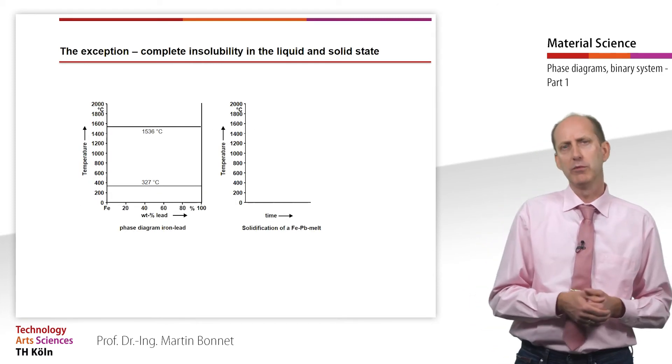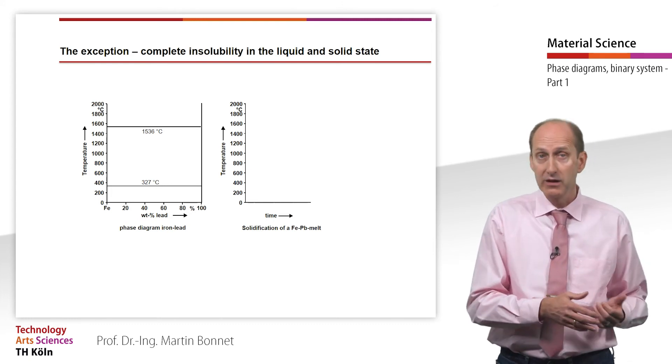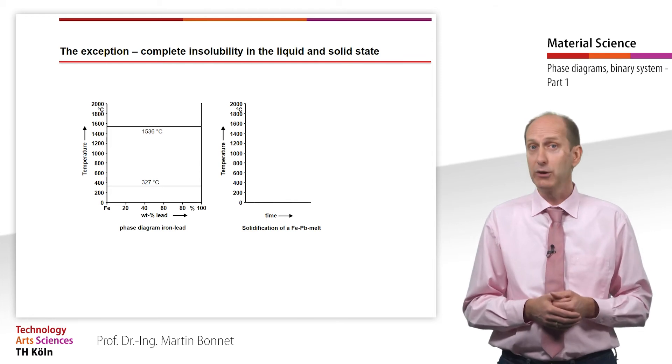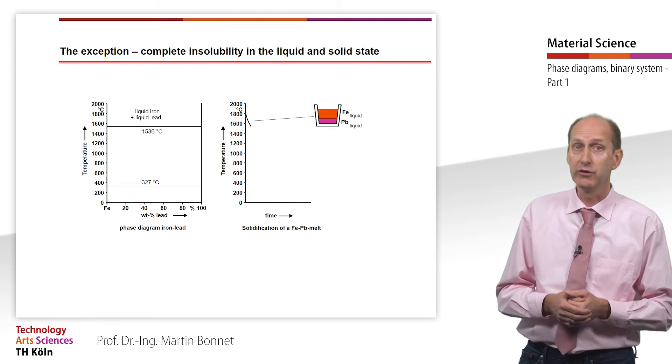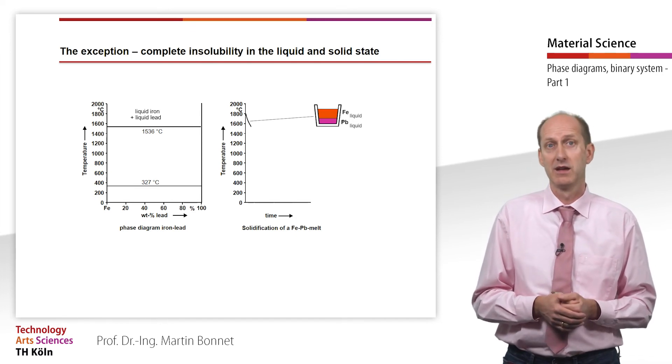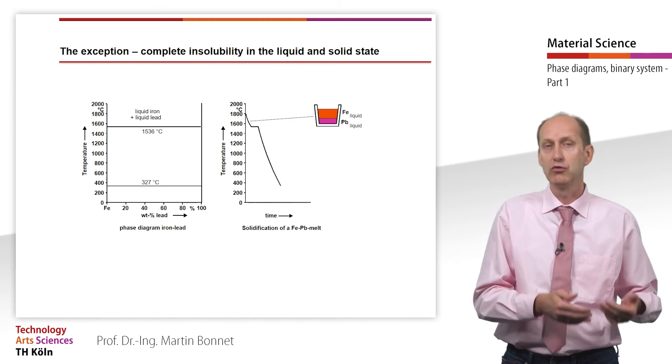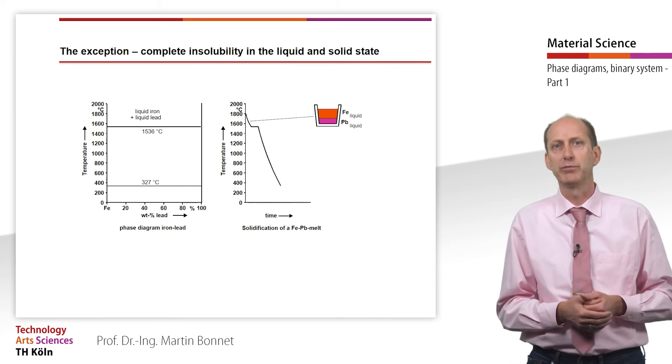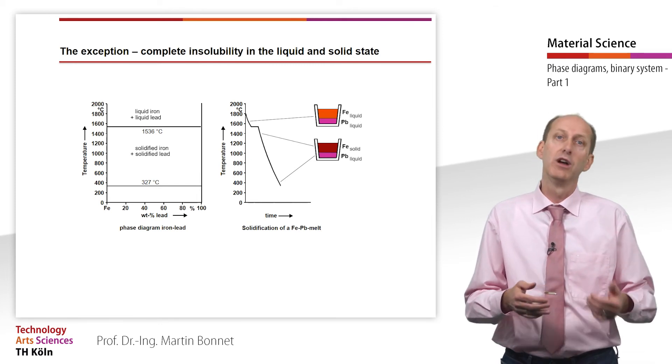In the simplest case, both components of a binary system already separate in the melt, which means a system with complete insolubility in the liquid and solid state. Above the melting temperature of the components, both iron and lead are liquid with the iron floating on top of the lead due to its lower density. When the crystallization temperature of iron is reached at 1536 degrees Celsius, the typical arrest point of pure metals becomes apparent. After solidification of the iron, the system can continue to cool down. When the crystallization temperature of lead is reached at 327 degrees Celsius, the second arrest point becomes apparent. After solidification of the lead, both the iron and lead are in a solid state and the system can continue to cool down.